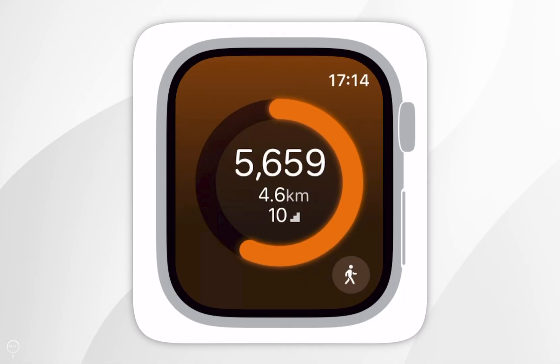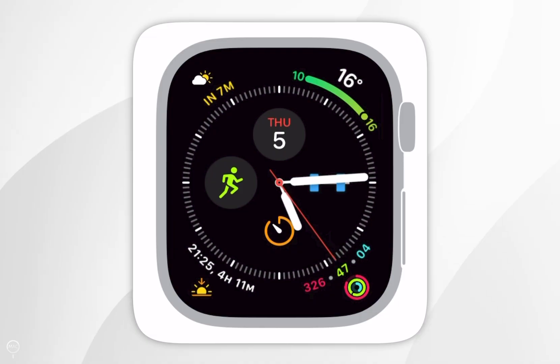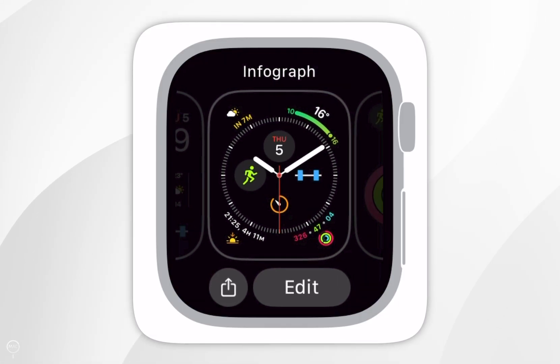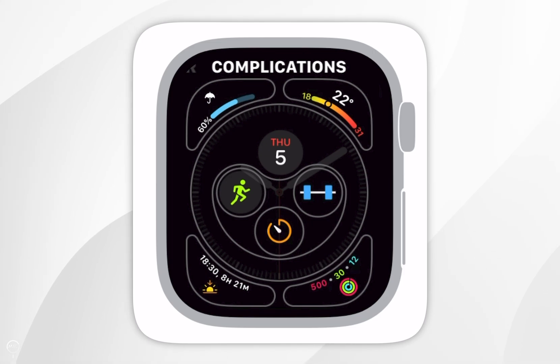Now, in order to add this to your Apple Watch face, you first want to go back to your Apple Watch and then press and hold on your Apple Watch face. Then you want to click edit, and you want to add the complication.